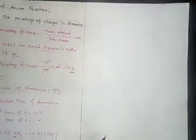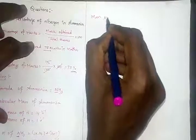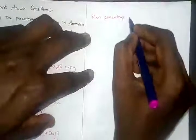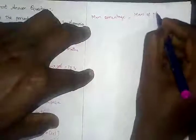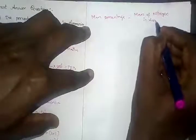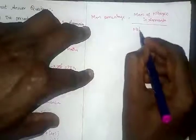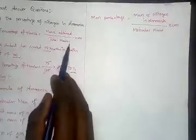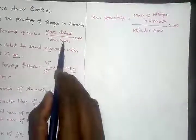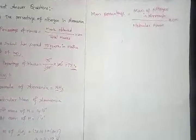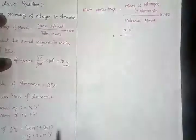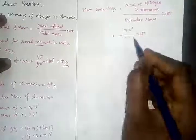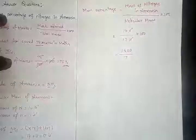Now let us write the formula to calculate mass percentage. Mass percentage equals mass of nitrogen in ammonia divided by molecular mass, into 100. Substituting values: 14u divided by 17u, into 100. The units cancel, giving us 1400 divided by 17.